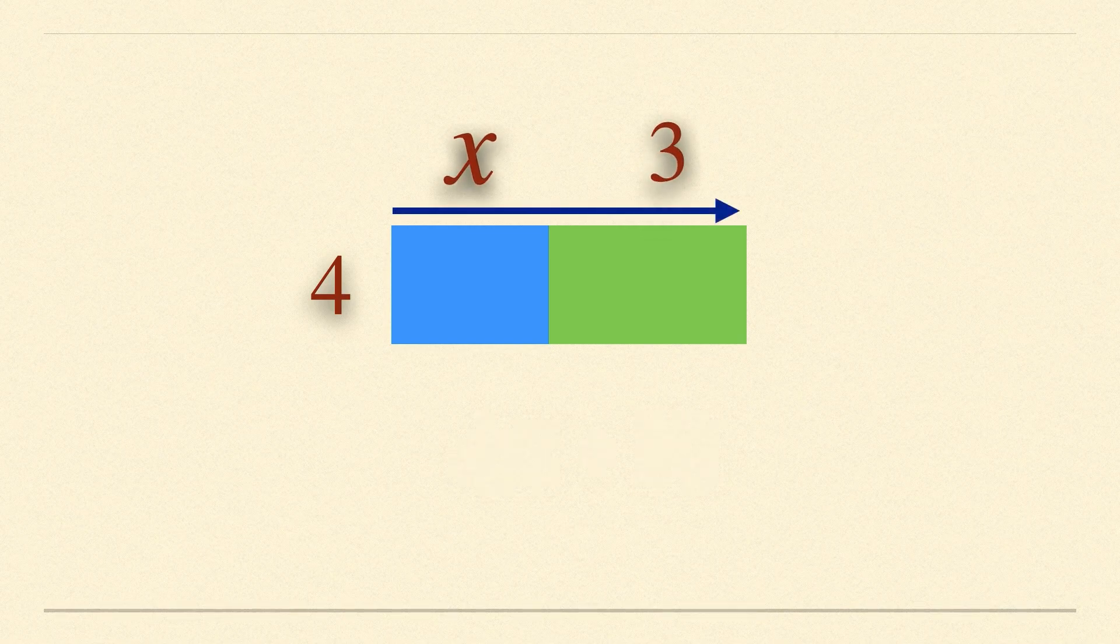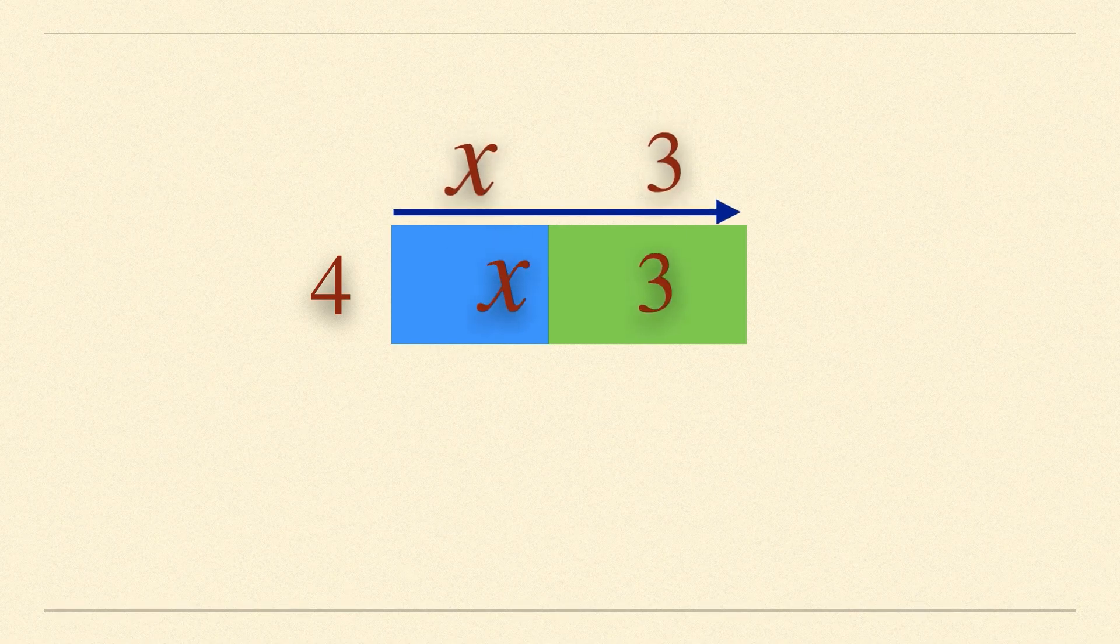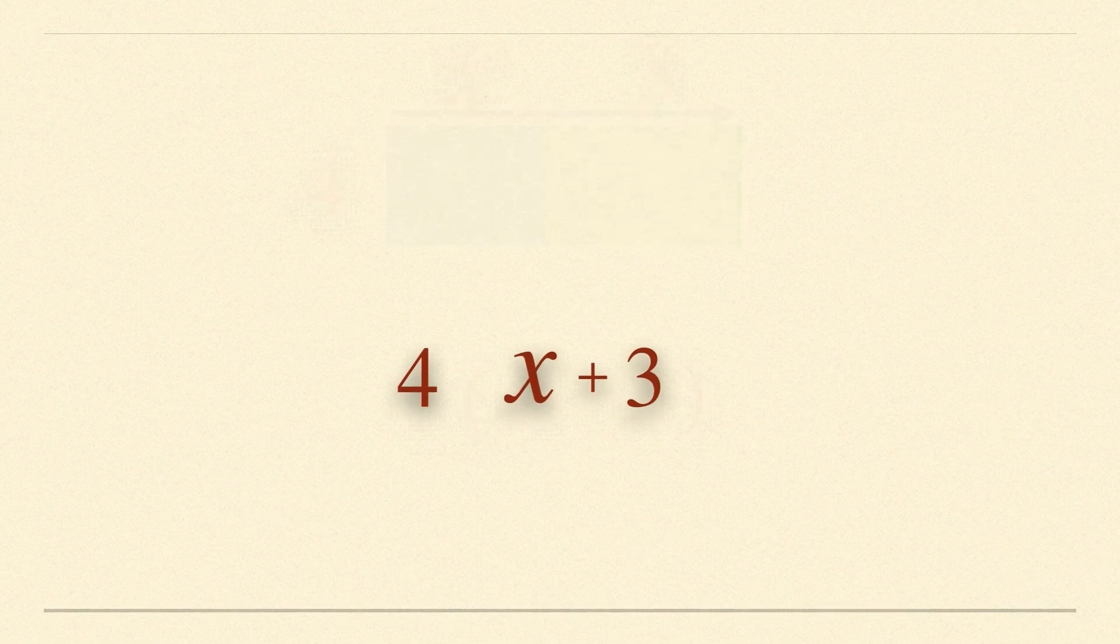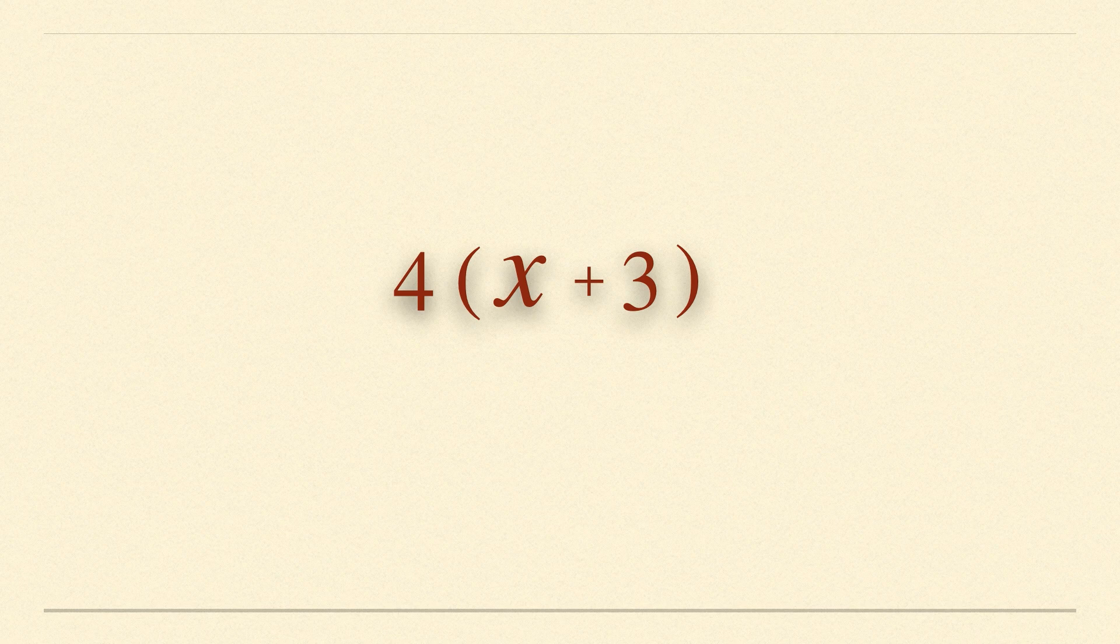Another way to find the area of the expression is to actually write the length of the shape as algebraic expression x plus 3 and multiply it with 4. Note that we need a bracket here in order to say that 4 multiplies everything inside the bracket. Area of this given shape can now be found by opening the bracket.